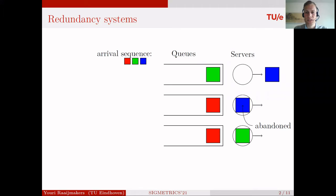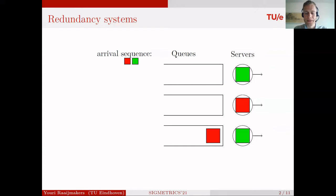In the next snapshot you will see that the green replica goes into service at the top server and the red replica goes into service at the middle server. Now observe that within redundancy, it might happen — and that's also what you see here — that multiple replicas of the same job are in service simultaneously.